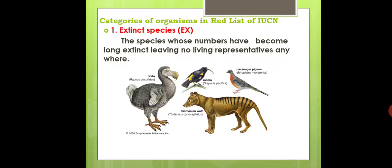What are the categories of red listed organisms? There are nine categories. The first one is Extinct Species, abbreviated as EX. It refers to species whose members have become long extinct, leaving no living representatives anywhere.